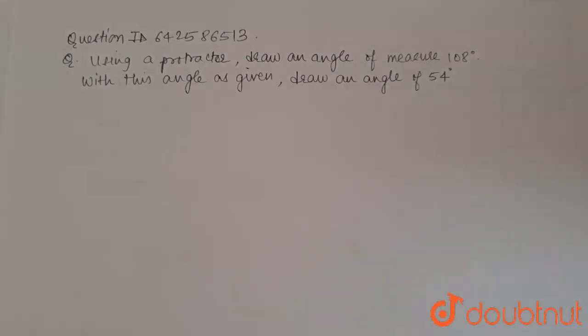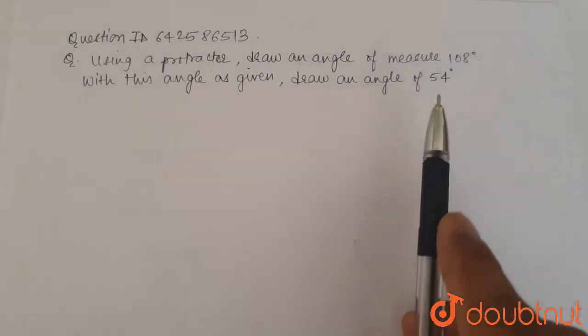The question is, using a protractor, draw an angle of 108 degrees and with this angle as given, draw another angle of 54 degrees.